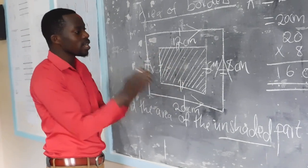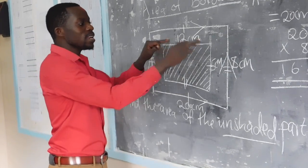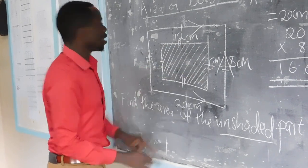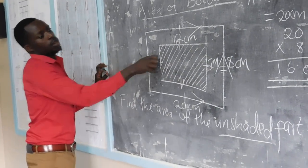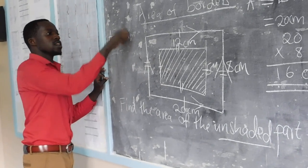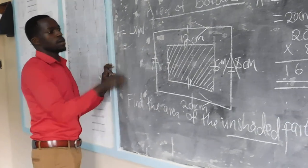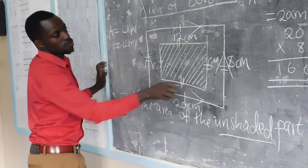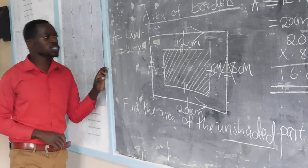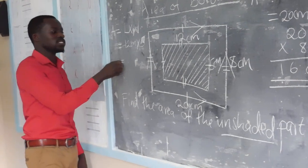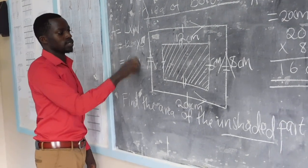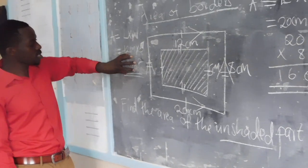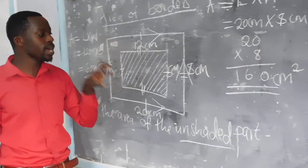Now I want us to look at the area of the inner rectangle using its measurements: 12 and 5. The area of a rectangle is given by length times width, whereby the length of the inner one is 12 centimeters multiplied by the width, which is 5 centimeters. When you multiply 12 by 5, you get 60 square centimeters — that is the area of the inner rectangle.